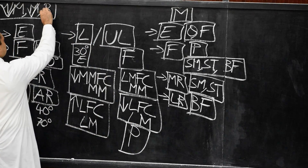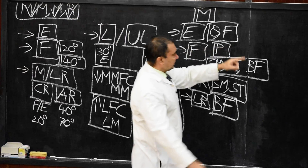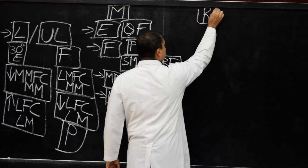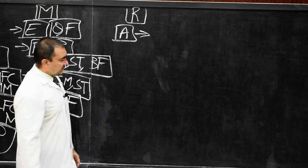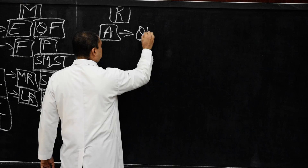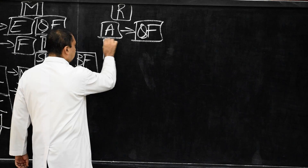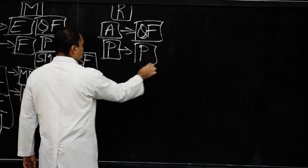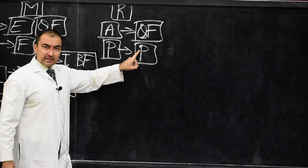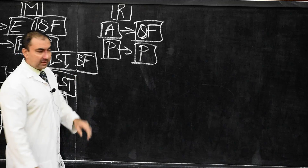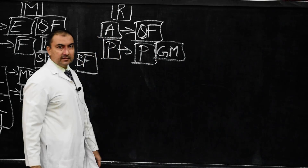Then we come to the last section — relations. Anteriorly, the knee joint is related with the quadriceps femoris tendon, patella, and patellar ligament. Posteriorly, the entire knee joint is related with the popliteal nerves, vessels, and gastrocnemius muscle — both its medial and lateral heads.